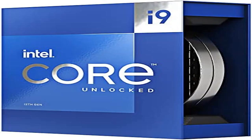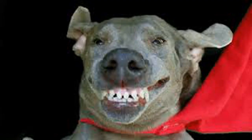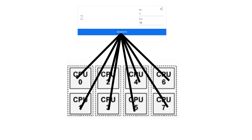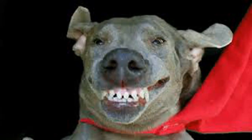For every processor core that you have, there will be two different random number generators, because each core has two logical processors. But all of these share data from a single PRNG, which has a single seed.